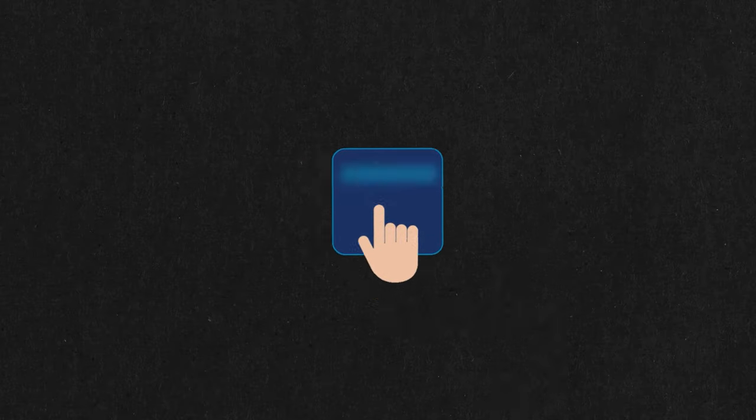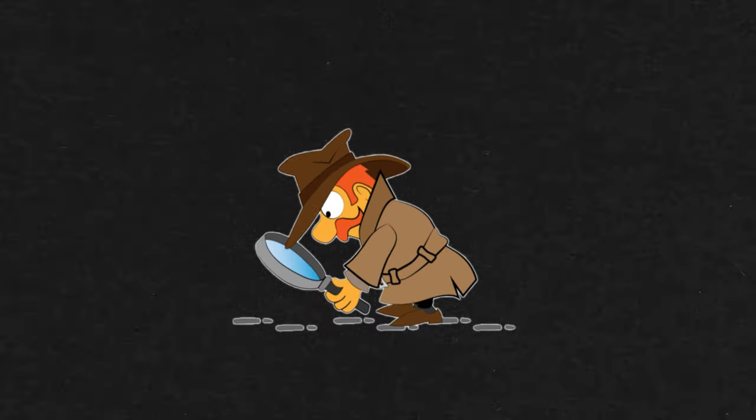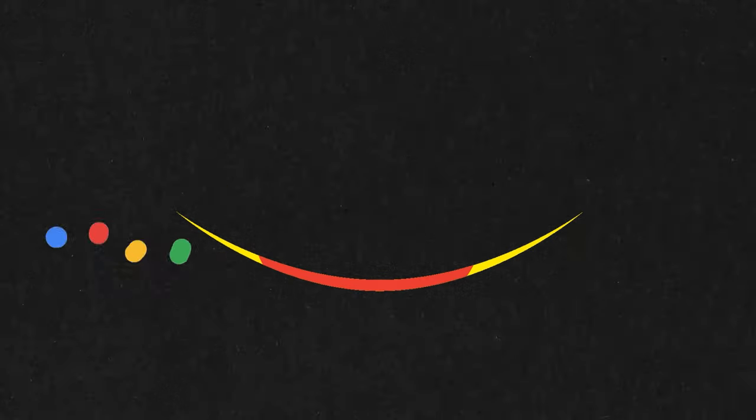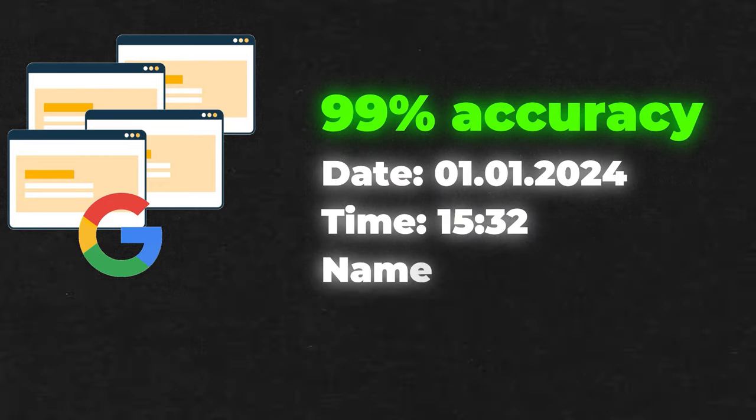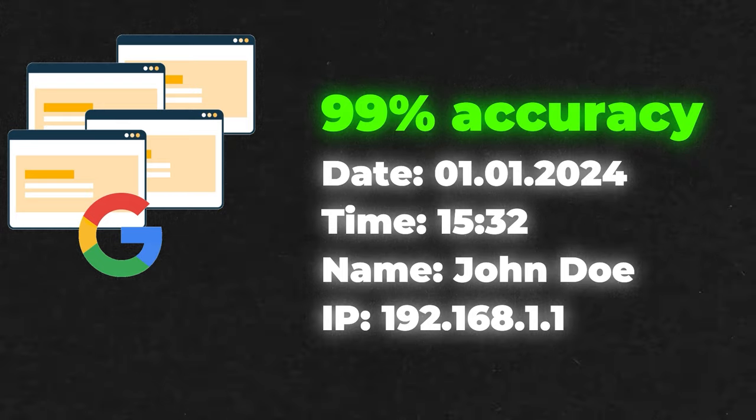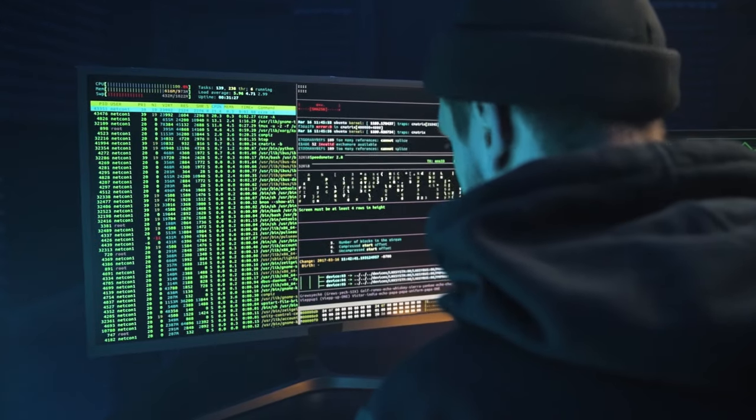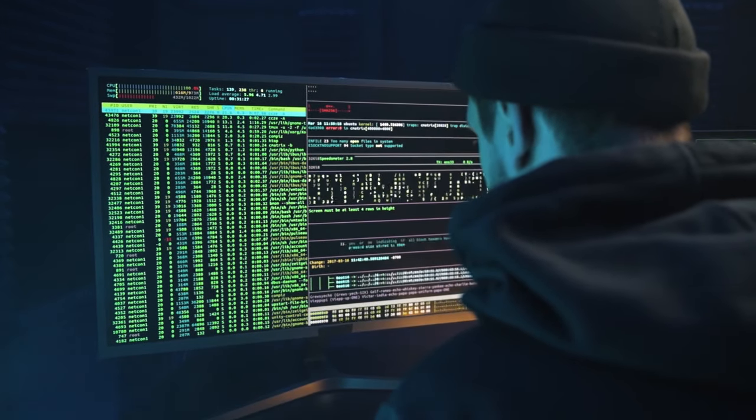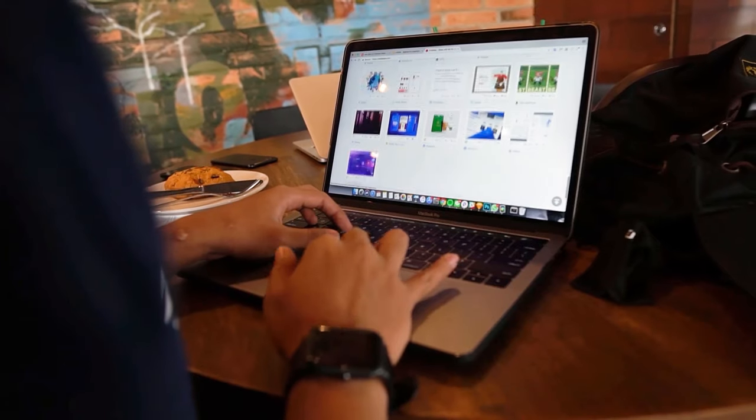These fingerprints, though invisible, are powerful tools that websites use to identify and track your online movements. Websites such as Google and many others possess the capability to ascertain with a staggering 99% accuracy that you visited their site on a specific date and time. This remarkable level of precision is achieved through the use of browser fingerprinting, a sophisticated technology that meticulously tracks and identifies your unique digital footprint as you navigate the online world.